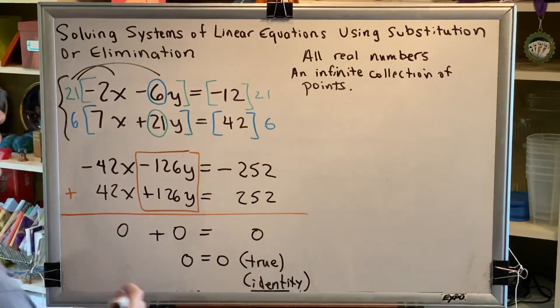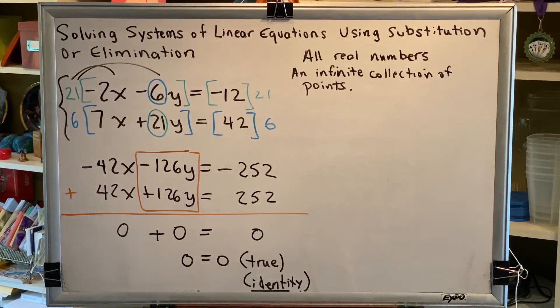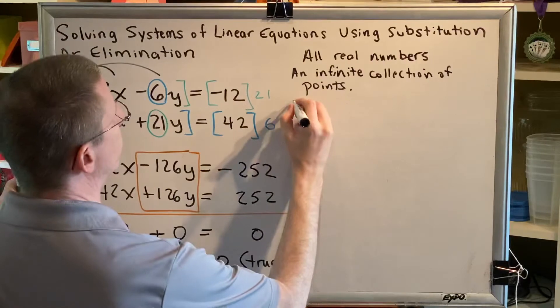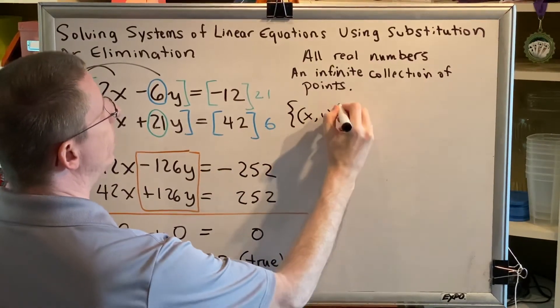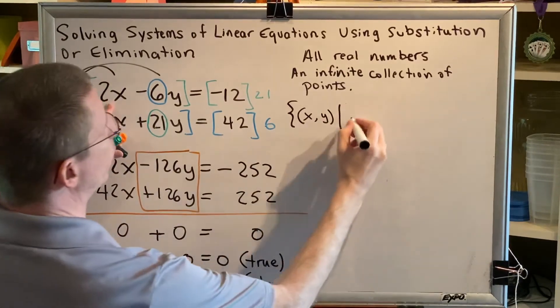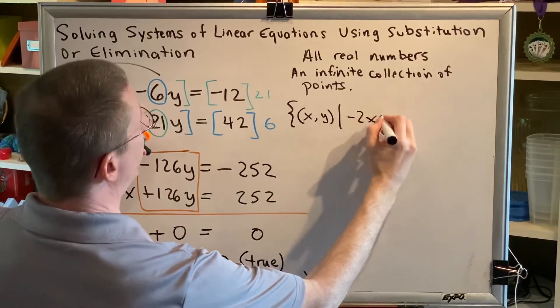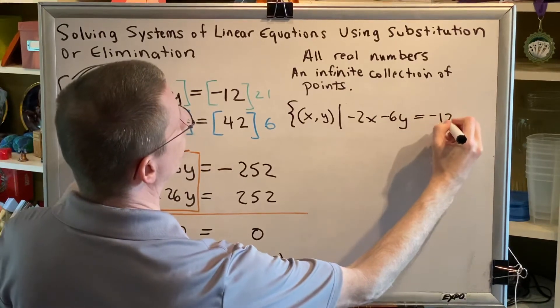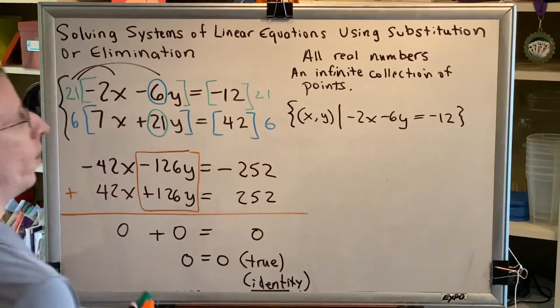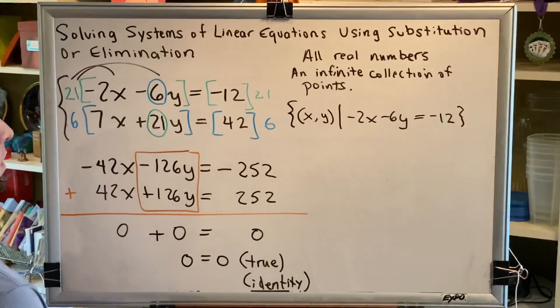So there are many ways that we can write our final answer to this problem. We could write a set. Our set consists of all points, x comma y, such that negative 2x minus 6y is equal to negative 12. That's one way to write the answer to this problem.